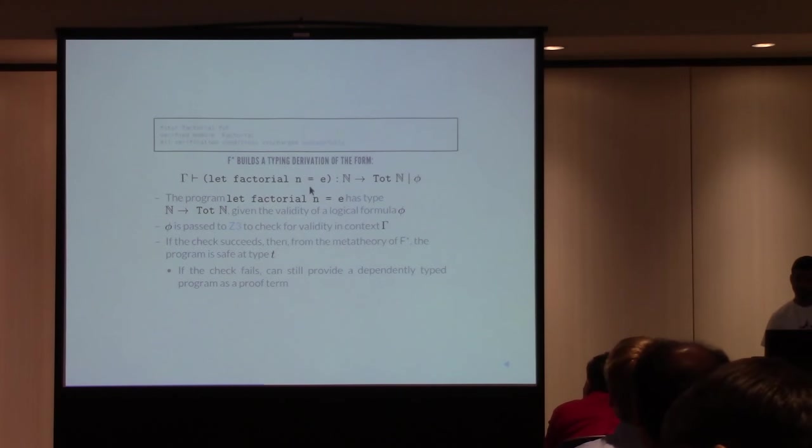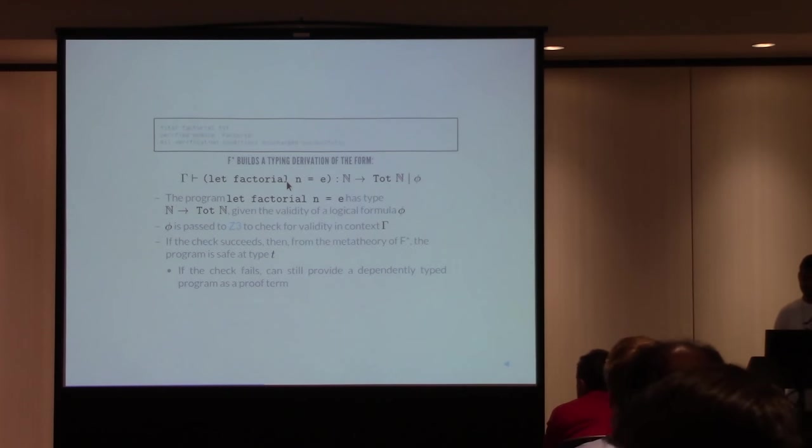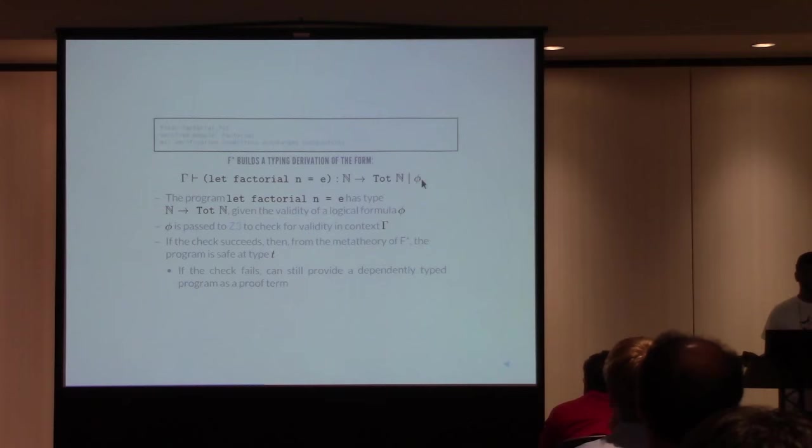So when you write an F-Star program, like, say, factorial, and you claim that it has a type, say, nat arrow tot nat, what F-Star does is, in a context gamma, which may define the F-Star prelude, it builds a typing derivation for factorial at this type. And in the process of building such a derivation, it also produces a verification condition, phi, which is a logical formula. And the way you should read this judgment is that if the formula phi is valid in the context gamma, then it's sound to view factorial at the type that you have here. So once you get this VC out, this verification condition out, we feed this to Z3, which is the SMT solver that we typically use. And an interesting thing is that this formula phi is a formula in a higher-order dependency type logic, whereas Z3 is a first-order logic.